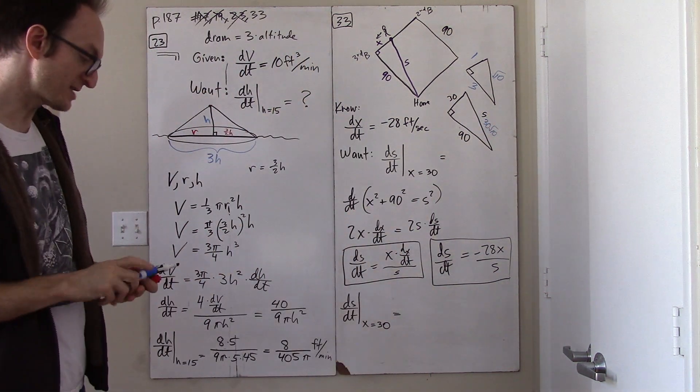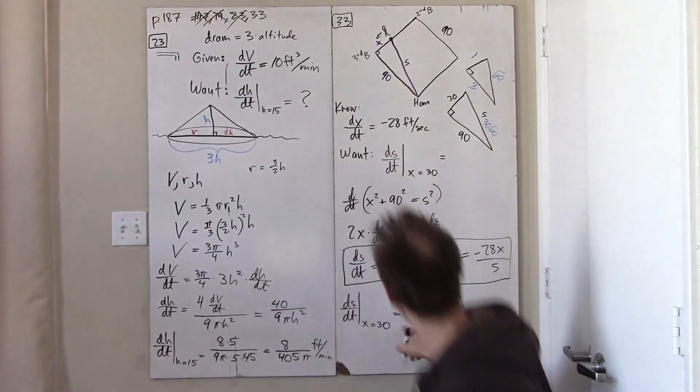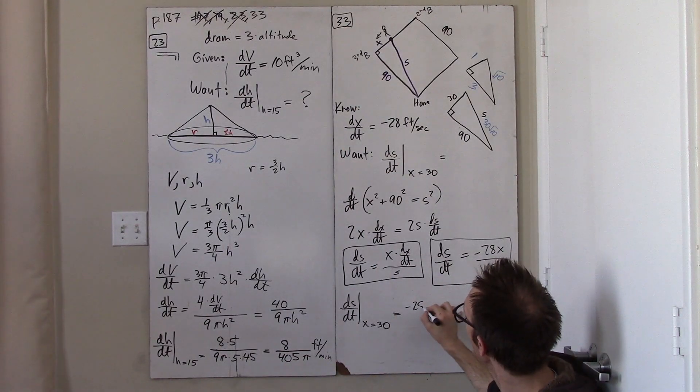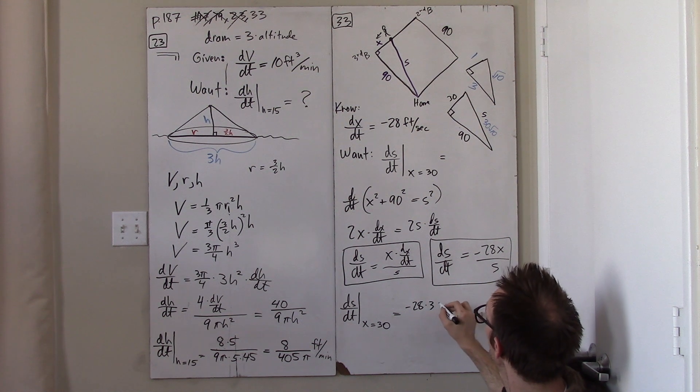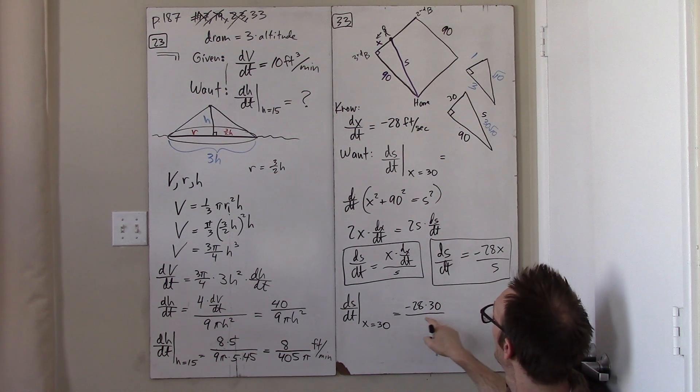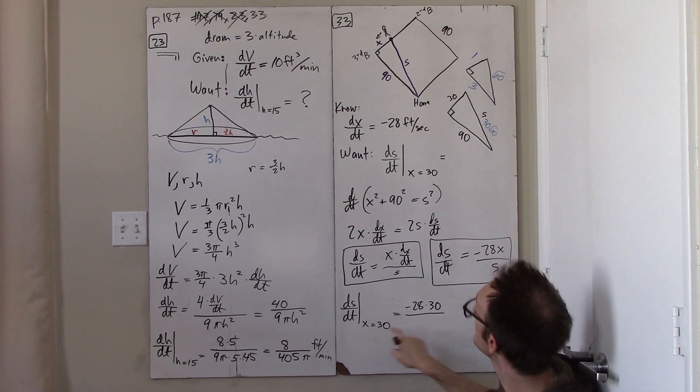Okay, and if that's true, then the answer to this problem is negative 28 times x is just 30 over s.